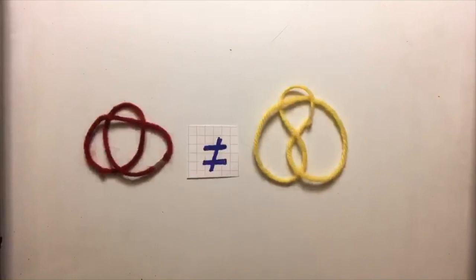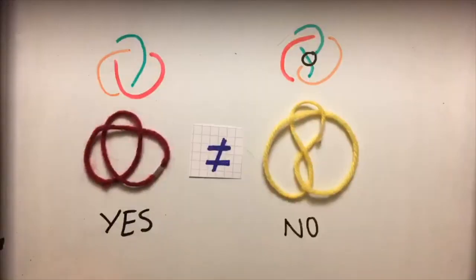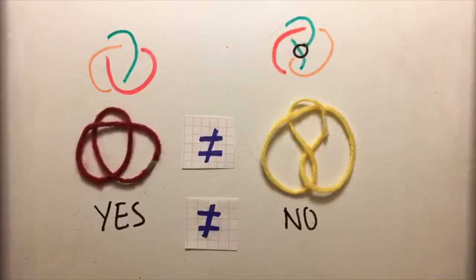We can use tricolorability to prove that two knots are different. The red knot is tricolorable, and the yellow knot isn't. This proves that these are not the same knot.